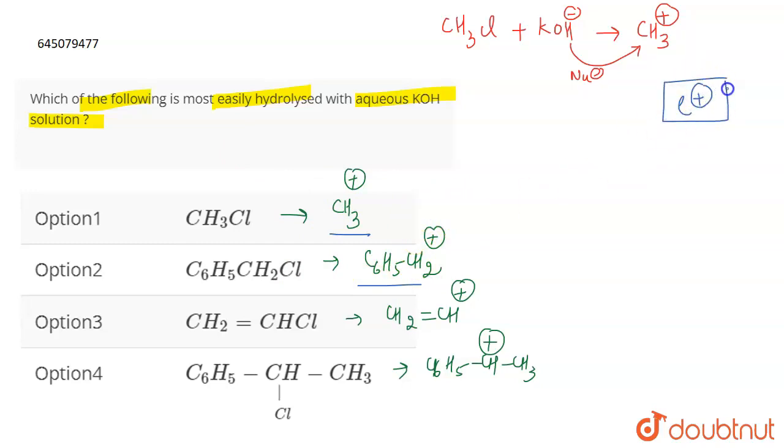Now if a plus M or a plus I effect, which are plus M or plus I groups attached to the carbocation, they are electron donating groups, they stabilize the carbocation.